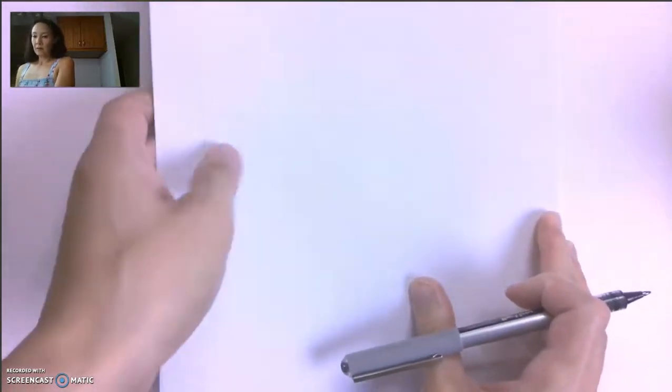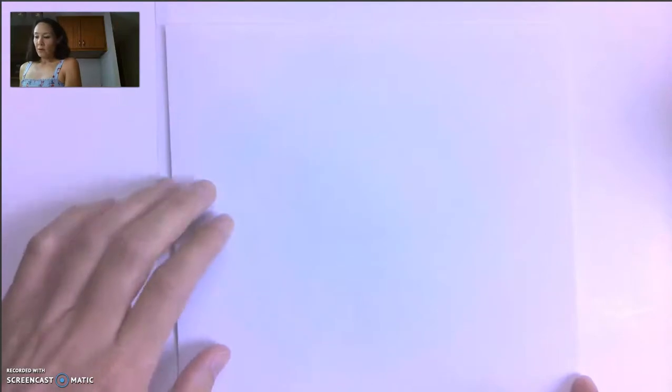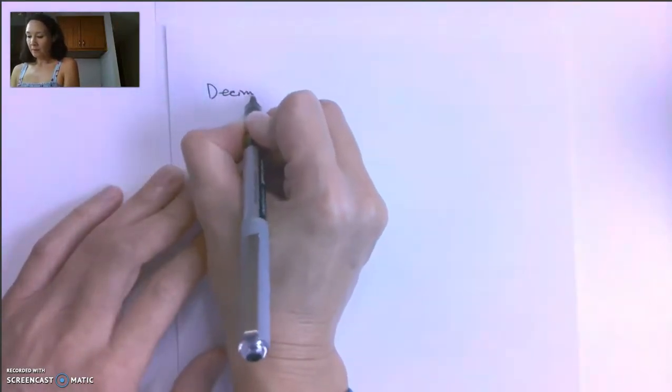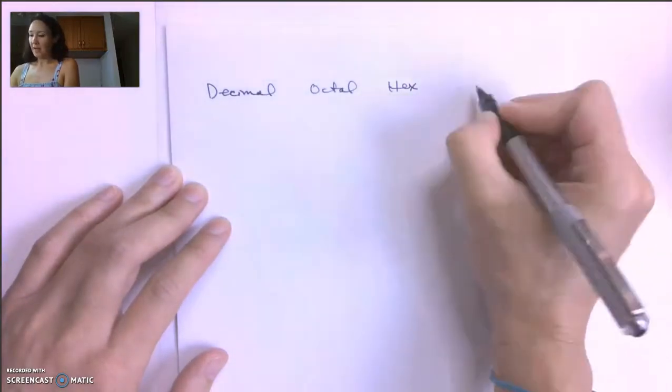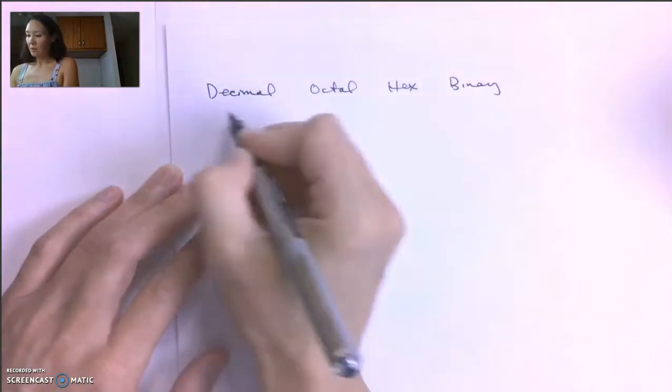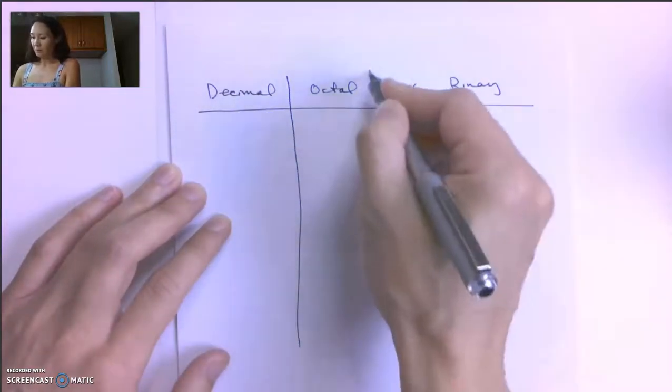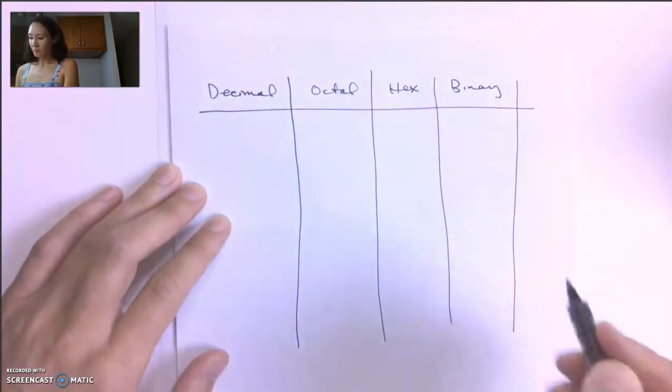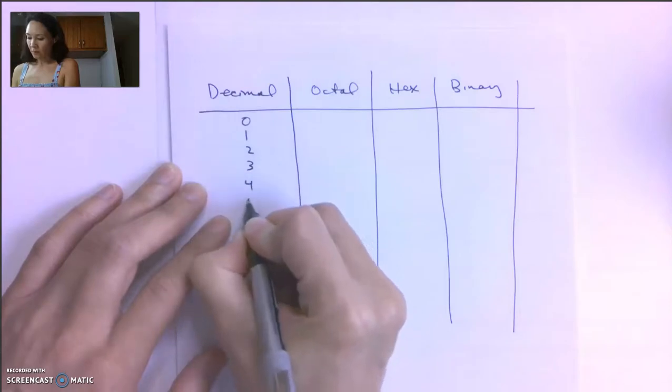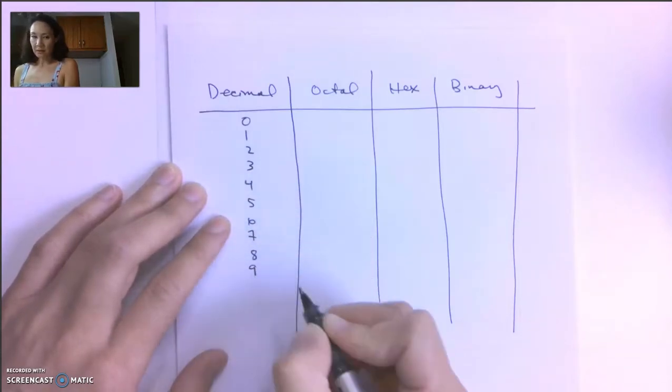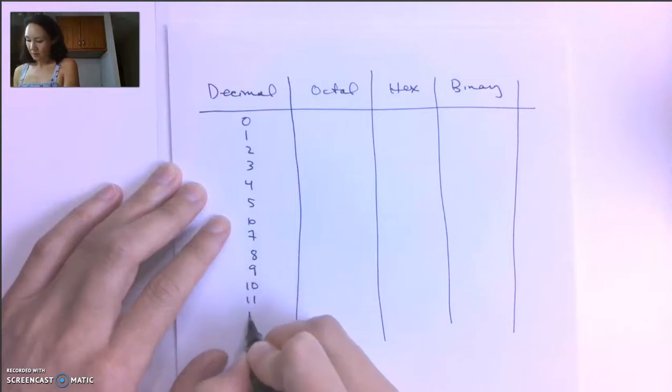So let me write these out for you so you can see them all together. So if I were to make a table: decimal, octal, hexadecimal, I'm going to abbreviate to hex, and binary numbers so that you could compare them all. Decimal: 0, 1, 2, 3, 4, 5, 6, 7, 8, 9, start over, 10, 11, 12, 13, 14, 15, and 16.